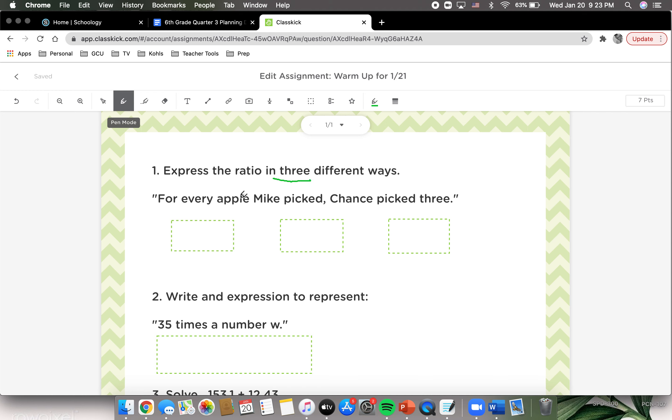For every apple Mike picked, Chance picked three. So for every apple, meaning one that Mike picked, Chance picked three of them. One way we can write this is one over three, or one to three, or one colon three.